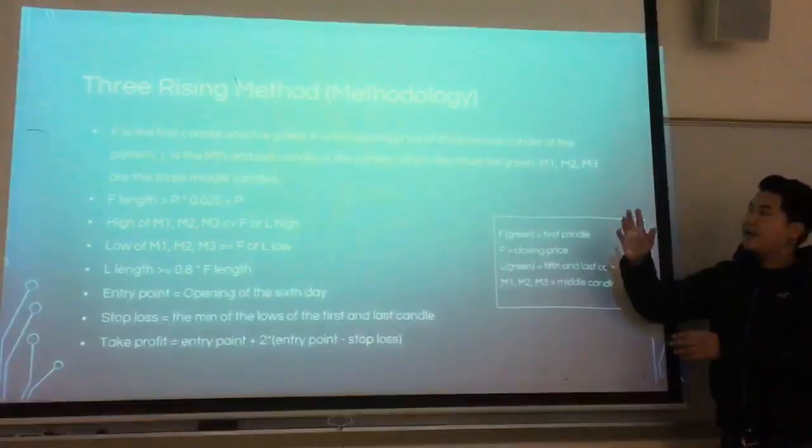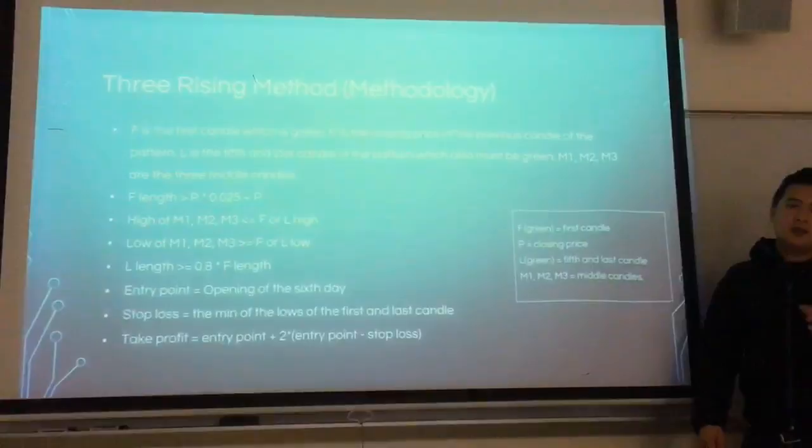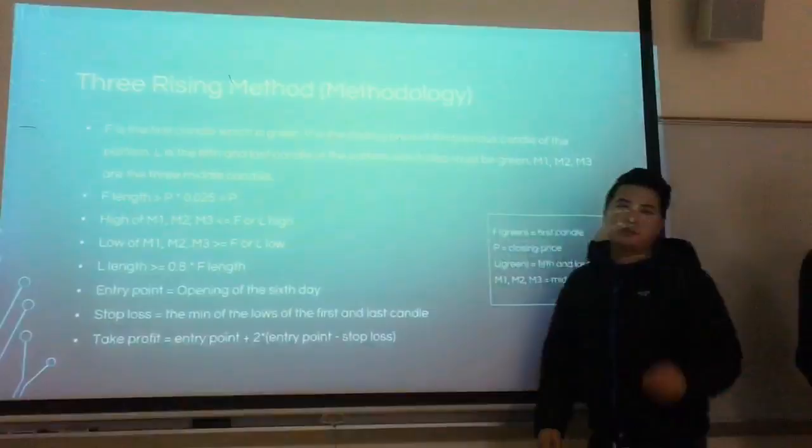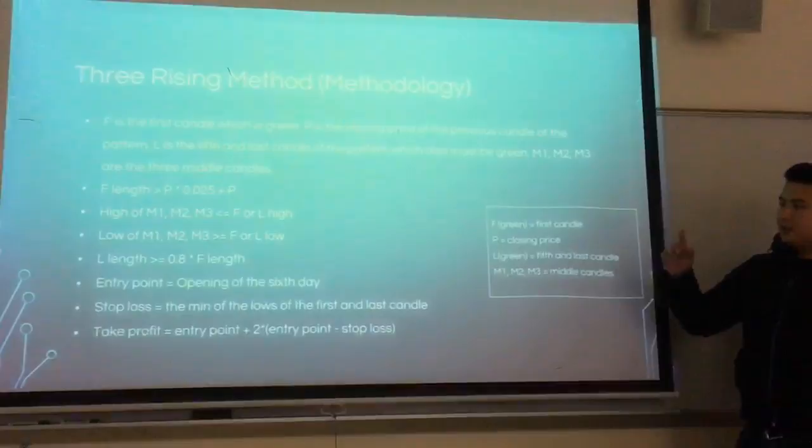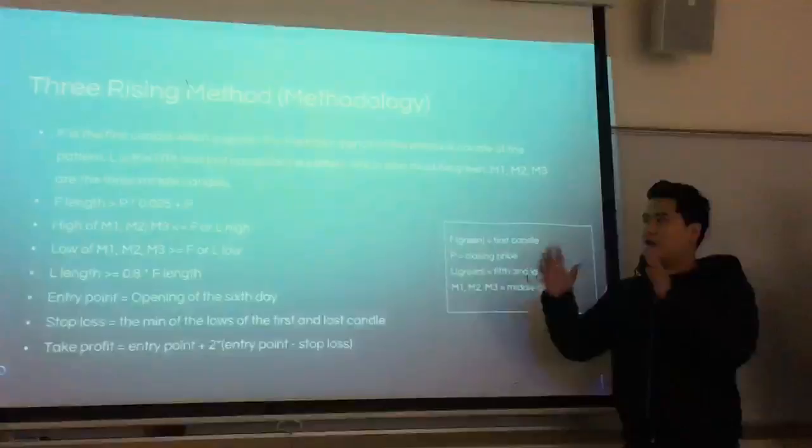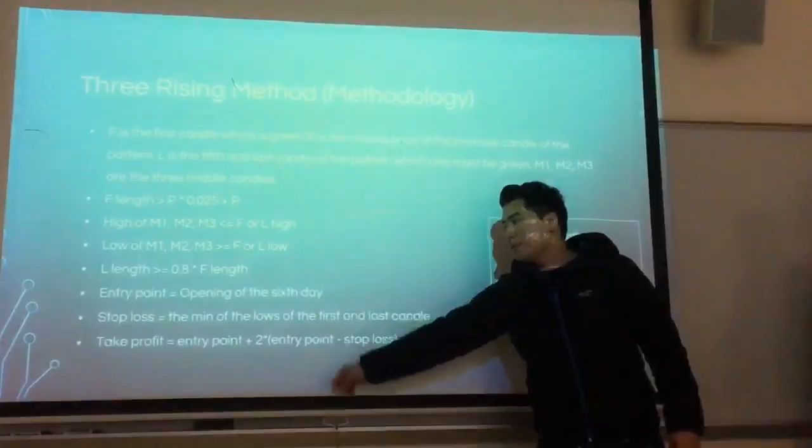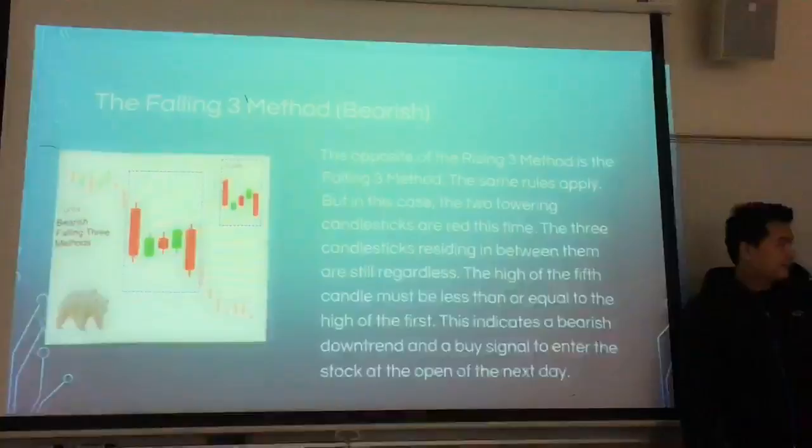As you can see the method, F is the first candle, the first long green candle. P is the closing price, that's the candle before the first candle. The length of F should always be 25% more than the previous price. The high of M1 and M3, the small candles, should always be in the range of the first and the last candle. The low is the same thing, it should be greater than the low of the first and the last candle. The L length, that's the length of the second big green candle, should be kind of identical to the first long candle or like almost 80% of the first candle. The entry point is opening on the sixth day. Stop loss is the minimum of the lowest of the first and the last candle. Take profit is entry point plus two times entry point and stop loss.